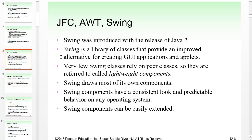In addition to AWT, we have Swing, introduced with Java 2. Swing is a library of classes that provide an improved alternative for creating GUI applications and applets. Very few Swing classes rely on peer classes, so we call them lightweight components. Swing draws most of its own components rather than asking the operating system, so Swing components have a consistent look and predictable behavior on any operating system, and they can be easily extended.